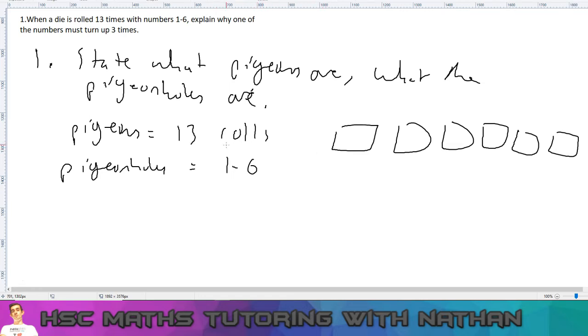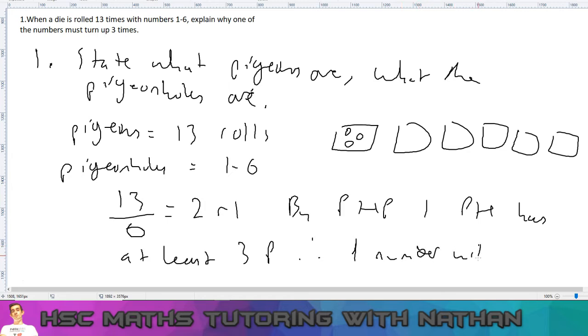So essentially what we've got here is we've got 6 numbers and 13 pigeons—so 6 pigeonholes and 13 pigeons, because what we're doing is we're rolling that die 13 times. So if we do what we say, we do the pigeons divided by the pigeonholes, we get 2 remainder 1. So by pigeonhole principle, one pigeonhole has at least 3 pigeons. And the thing about here, 3 pigeons in 1 pigeonhole means exactly this: one number will turn up 3 times because remember, this pigeonhole represents a number. And we're just showing here, if there's 3 pigeons in this 1, that means 3 rolls will have a 1. So we're going to say therefore, one number will turn up 3 times, and that's our conclusion.